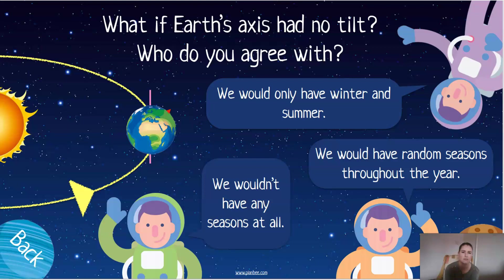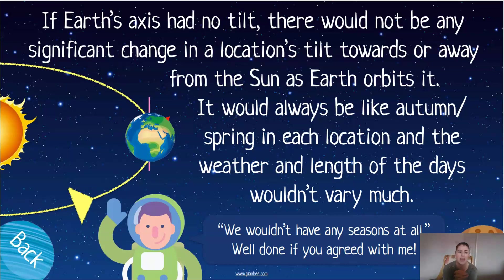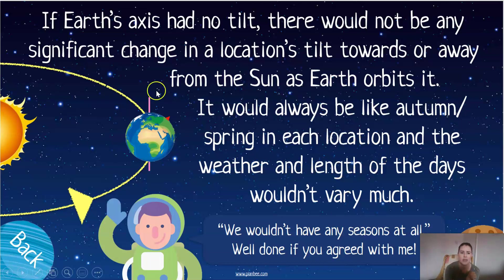Pause the video and have a think. If the Earth's axis had no tilt, there would not be any significant change in a location's orientation — either facing towards the sun or away — as the Earth orbits, which means it would always be either autumn or spring. The timing of days wouldn't differ much either, since we know we have longer days in summer and shorter in winter. Without tilt, we'd never change position, so we wouldn't have any seasons at all — you'd always experience the same weather pattern every day.